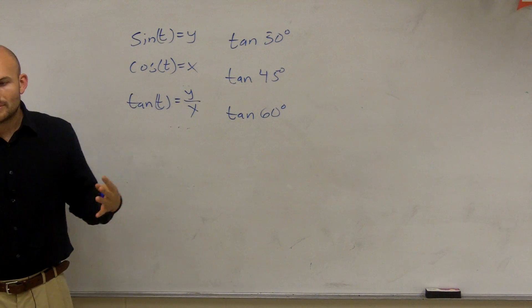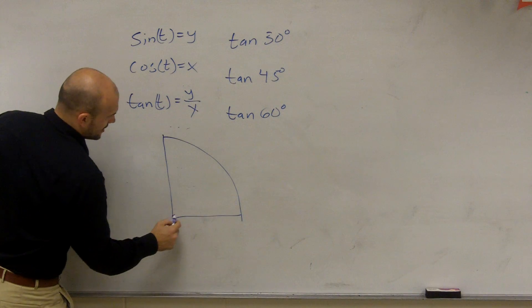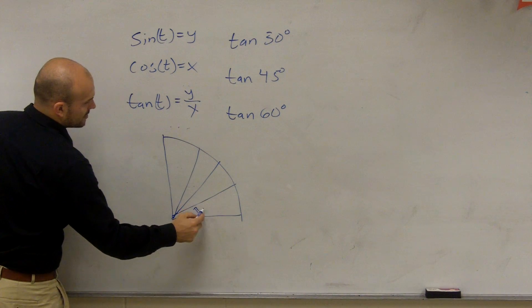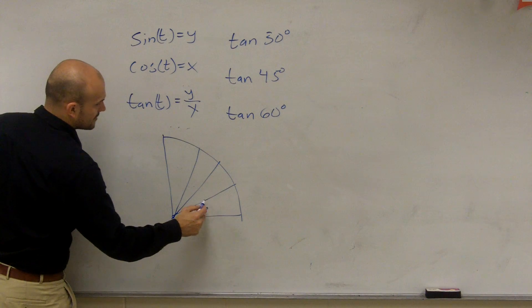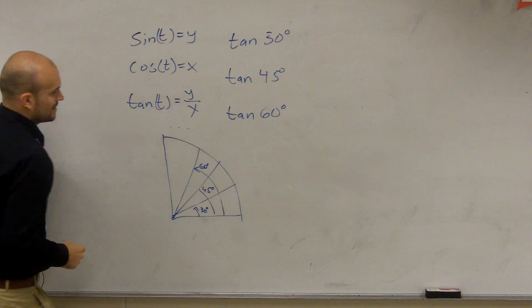Alright, so when we're looking at the unit circle, we're just going to look at our first quadrant. And remember, if here would be 30 degrees, here's 45 degrees, and here's going to be our 60 degree angle.